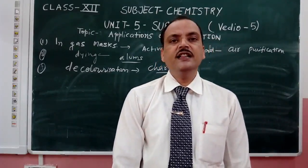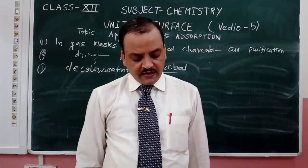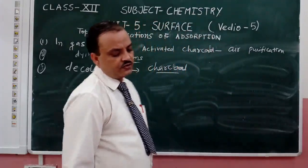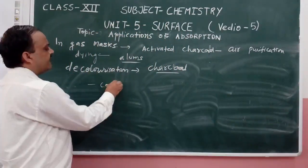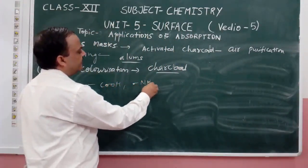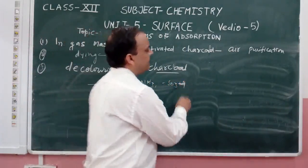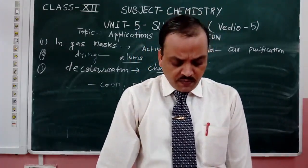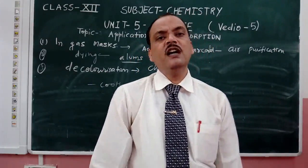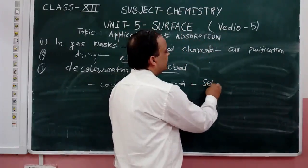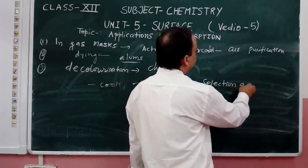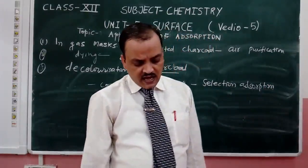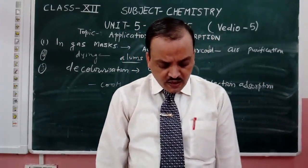Ion exchange resins: in this process we use different polymers containing groups like COOH, SO3H, ammonia, and sulfonic groups. In ion exchange resins, we use these groups. What property is used? Property of selective adsorption of ions is used there in this process.